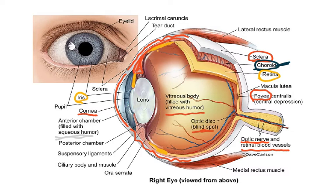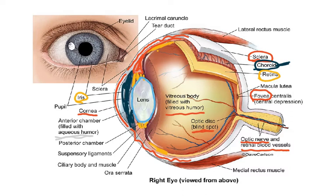Then we have the suspensory ligaments — these thread-like structures hold the lens in place. The lens is suspended by the suspensory ligaments, and importantly, the lens is the part of the eye that contains no blood vessels. So the three layers are: outermost sclera, then choroid, then retina.